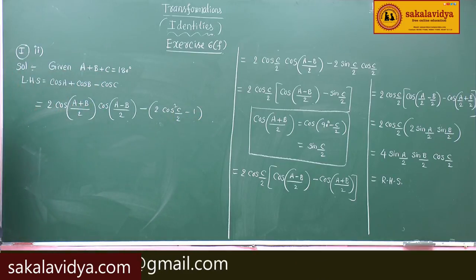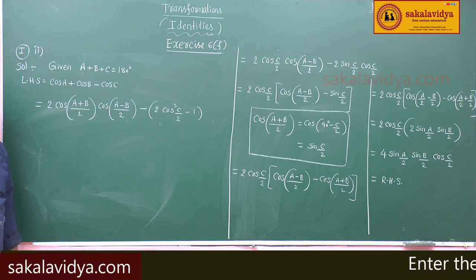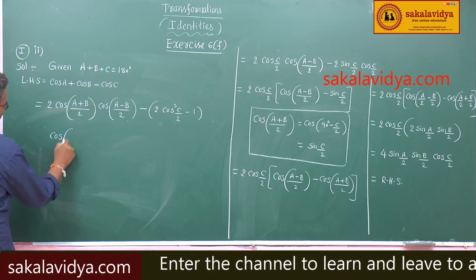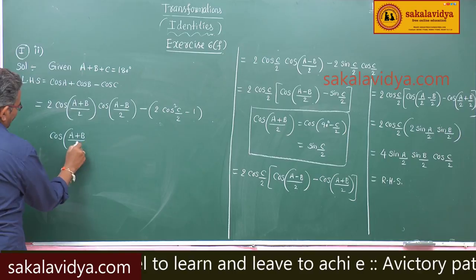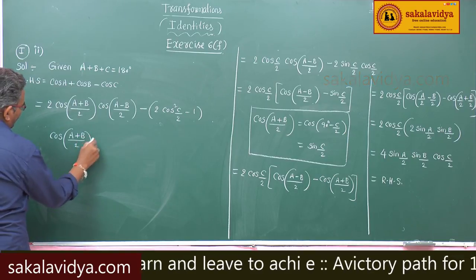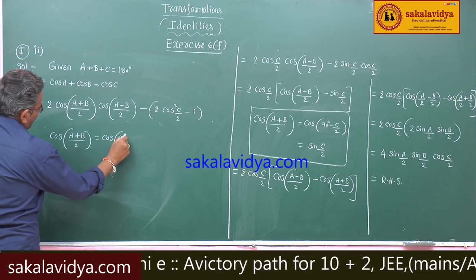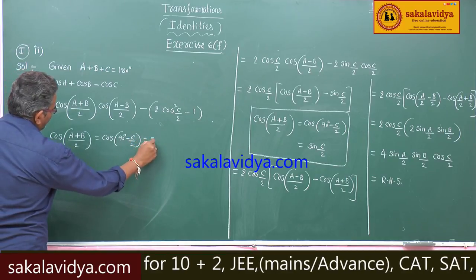Why should we write like this? Because on the right hand side you can observe plus 1 is there. So minus into minus gives plus 1. Now we have to find cos of (a plus b)/2. Cos of (a plus b)/2 is equal to cos of (90 degrees minus c/2), which is equal to sin(c/2).